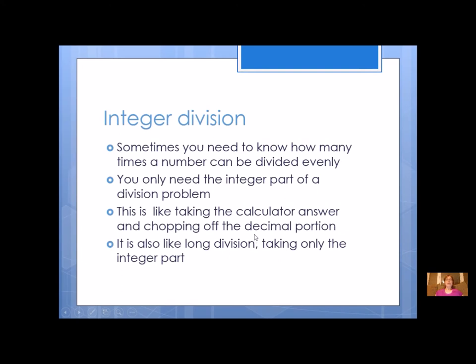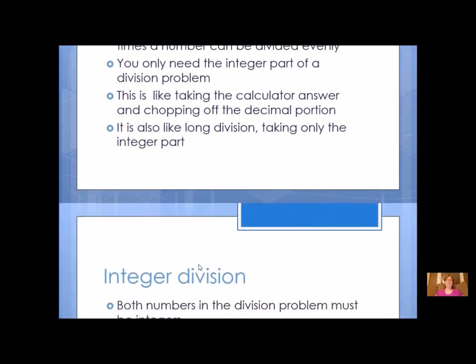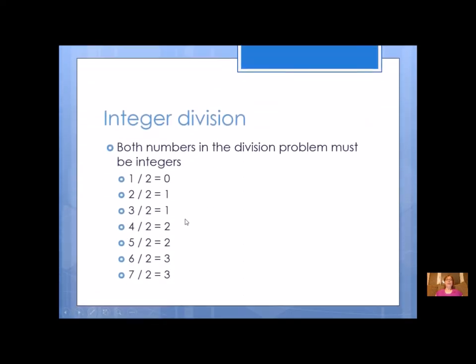Integer division. Sometimes you need to know how many times a number can be divided evenly. You only need the integer part of a division problem. This is like taking your calculator answer and just chopping off the decimal part. It's also like long division, like you learned when you were a little kid, taking only the integer part. Both numbers in the division problem must be integers in Python 2.7 in order to get an integer answer.